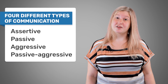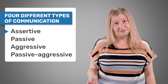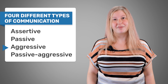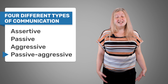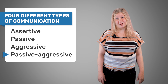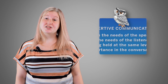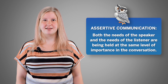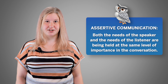You might be familiar with the four types of communication: assertive, passive, aggressive, and passive-aggressive communication. The key difference between these types is whose needs are being made a priority. In assertive communication, both the needs of the speaker and the needs of the listener are held at the same level of importance in the conversation.